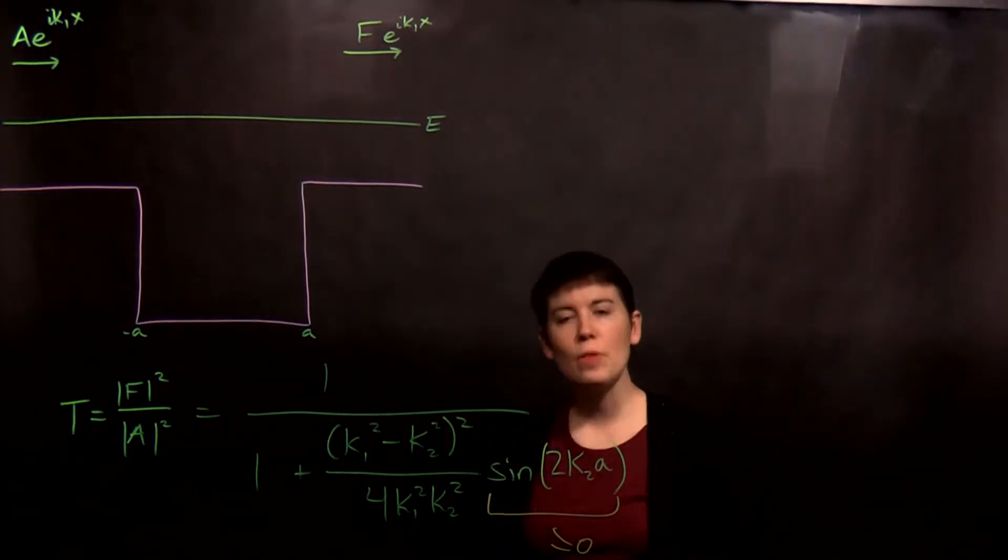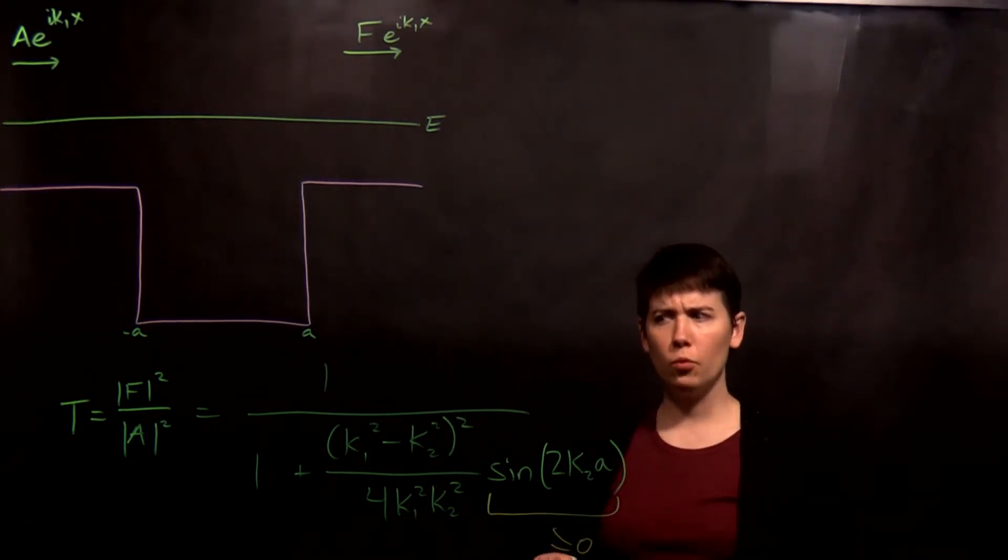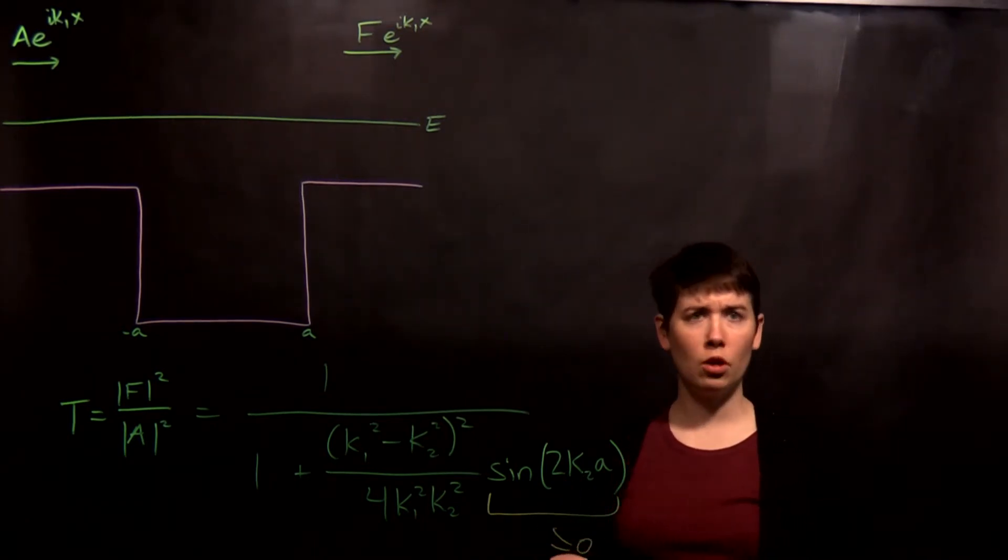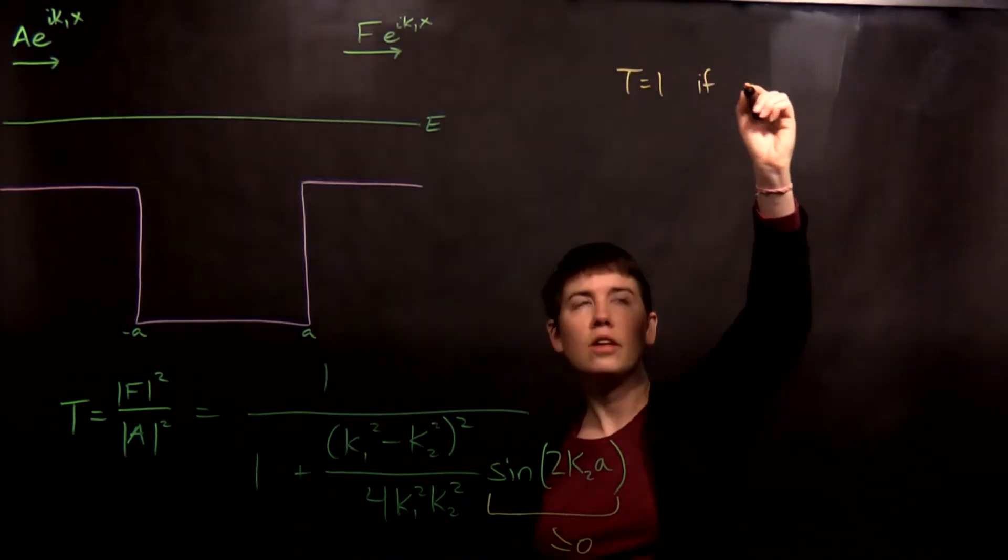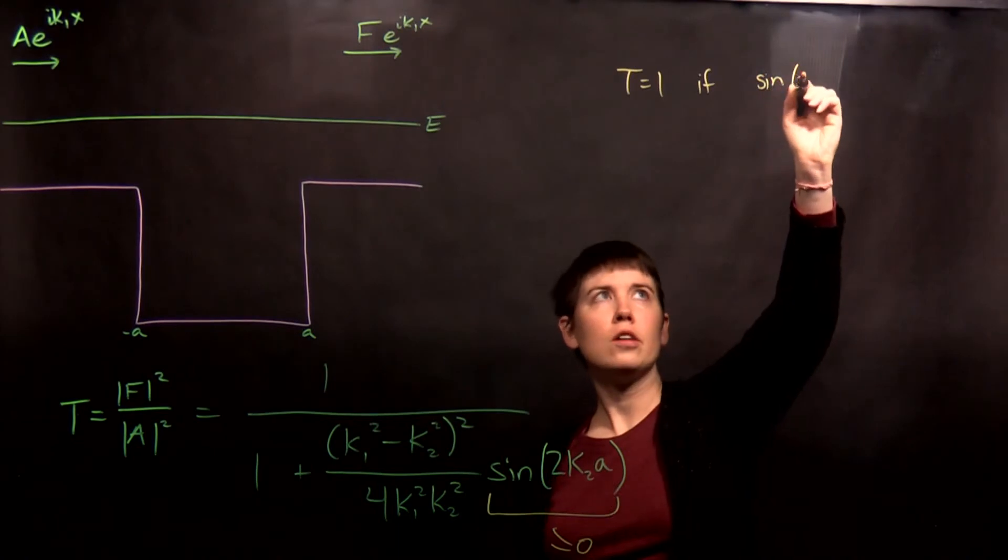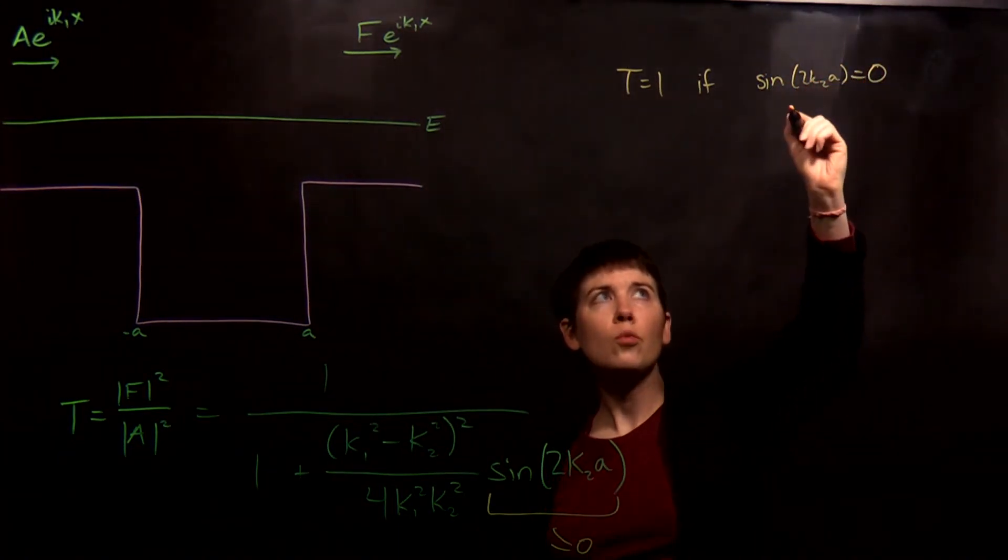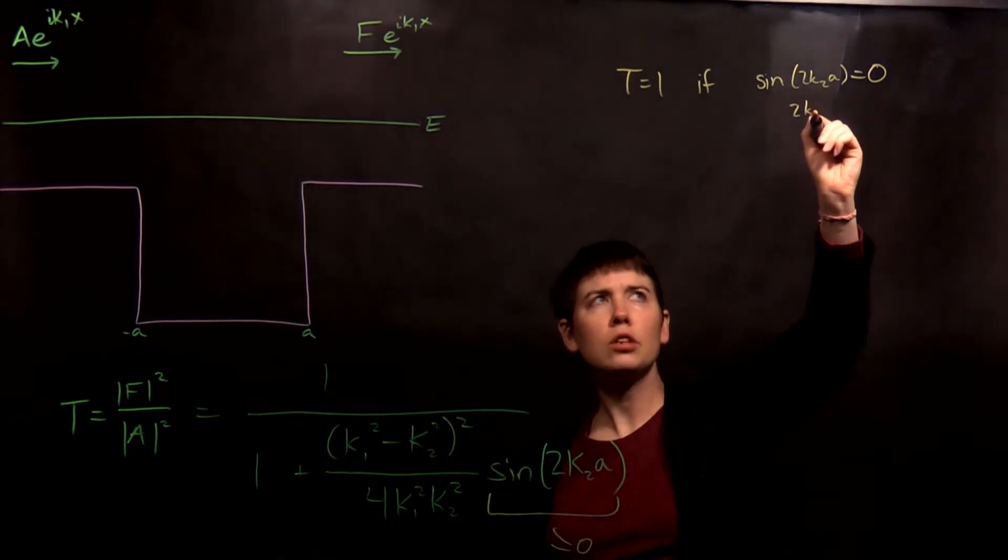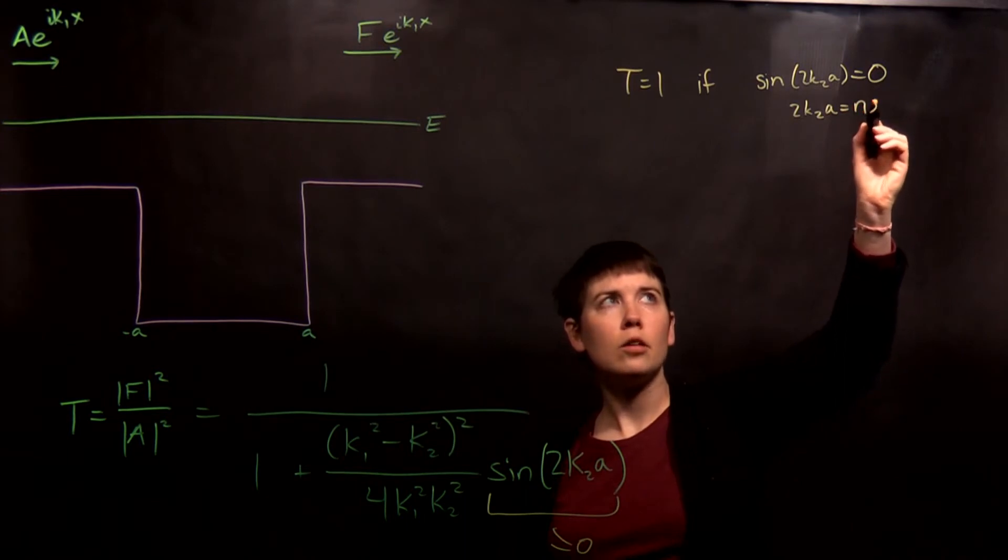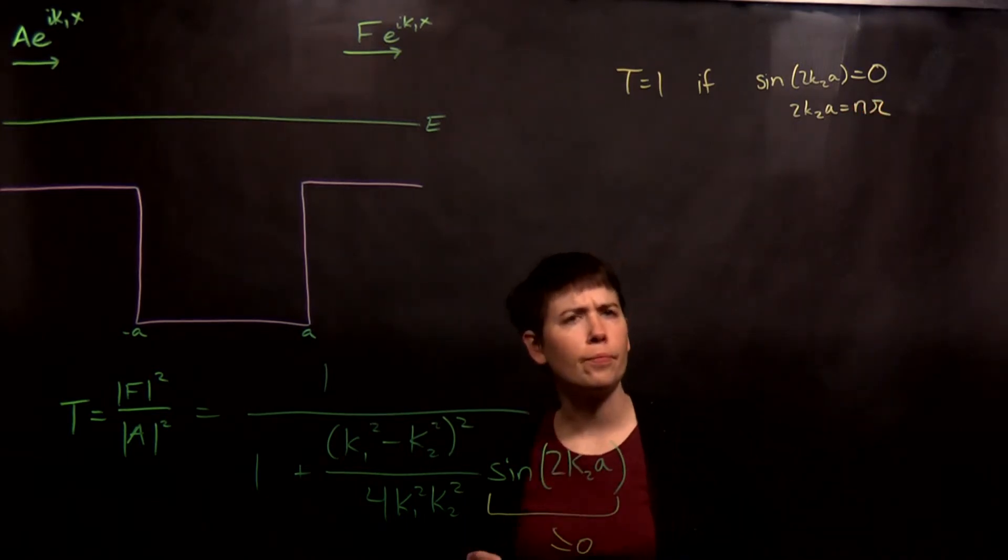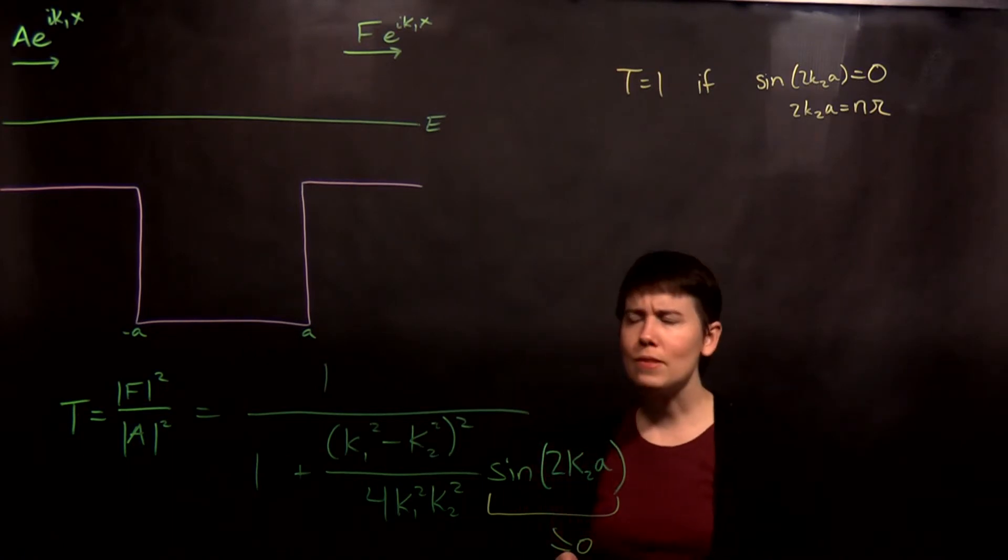So there are some special values of 2k2a for which the transmission coefficient is 1. So T equals 1 if sine of 2k2a equals 0, which is going to be a familiar looking constraint of 2k2a equals n pi. That is awfully familiar. So what does this mean?